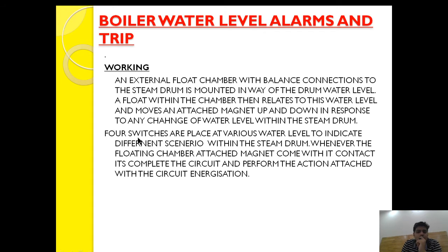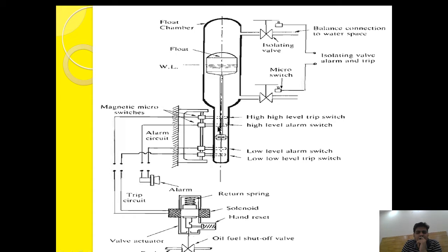Four switches are placed at various water levels to indicate different scenarios within the steam drum. When the float chamber's attached magnet comes in contact with a switch, it completes the circuit and performs the action attached to that circuit. When the magnet moves up or down and reaches a switch position, it completes that circuit and initiates an alarm or trip depending on the level.